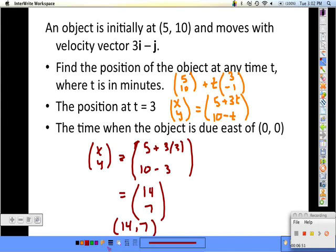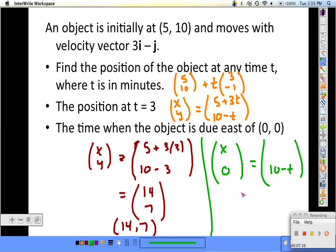In order to find the time when the object is due east of (0, 0), the y coordinate would be 0, so it's going to be x comma 0. Solving this, t is equal to 10 minutes.